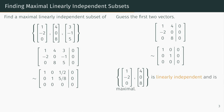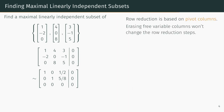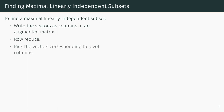Is it a coincidence that by removing the vector corresponding to the free variable column of our augmented matrix, we found a maximal linearly independent subset? The answer is no. Row reduction is based on pivot columns, and erasing free variable columns won't change any of the row reduction steps. Thus, if we started with an augmented matrix where vectors corresponding to free variable columns were erased, after we row reduce, we would see we only have pivot columns. This gives a procedure for finding a maximal linearly independent subset: first, write the vectors as columns of an augmented matrix, then row reduce, and then pick the original vectors corresponding to pivot columns of the row reduced matrix.